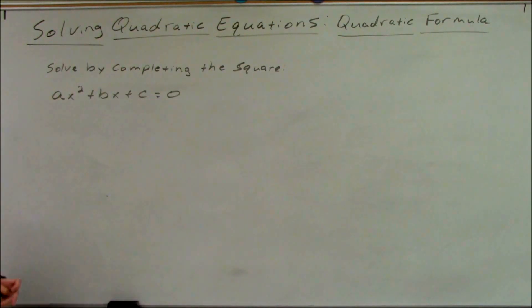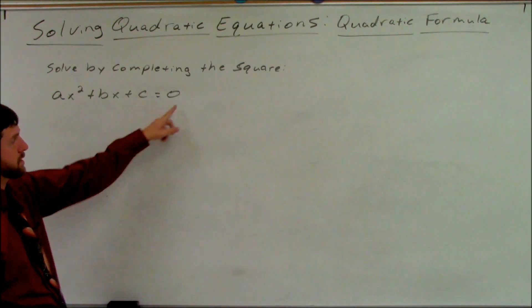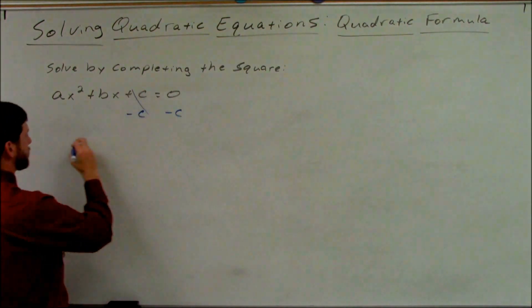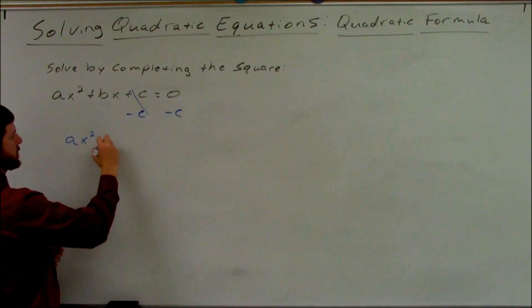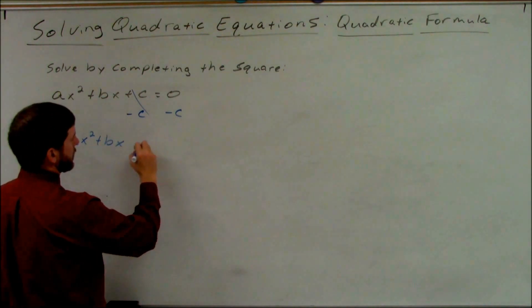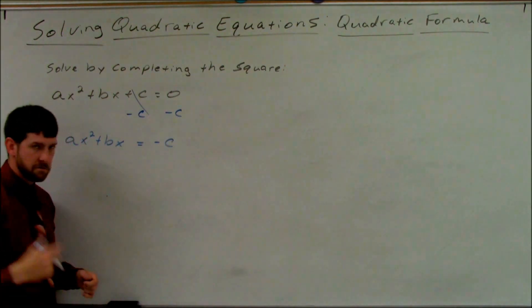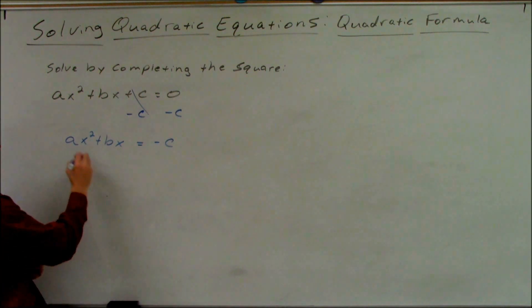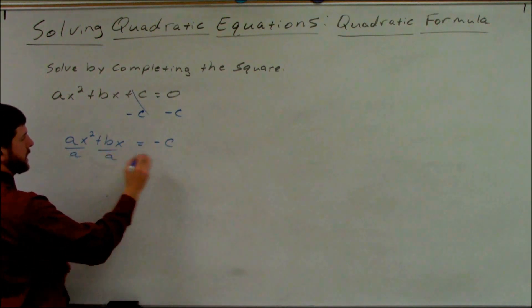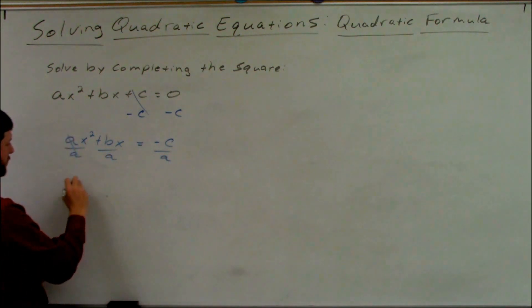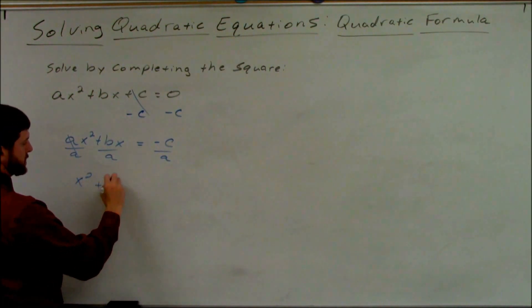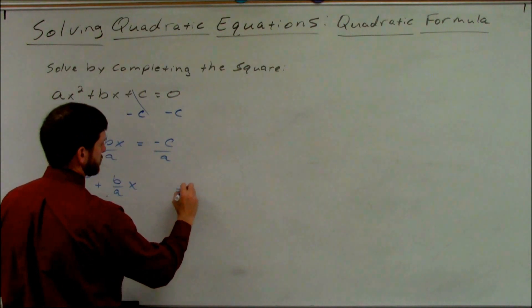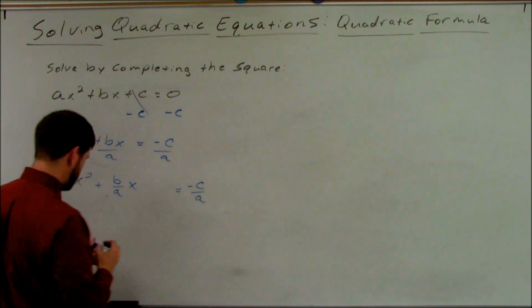First thing we're supposed to do is isolate our constants, so let's move our c to the other side. So we get ax squared plus bx equals negative c. Next move is to divide by the lead coefficient, so we're going to divide everything by a. So we get x squared plus b over a times x equals negative c over a.